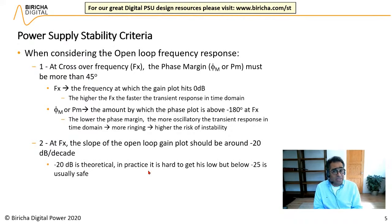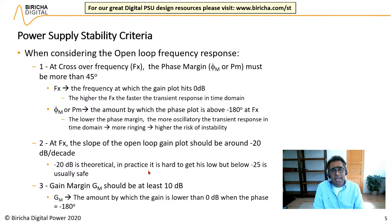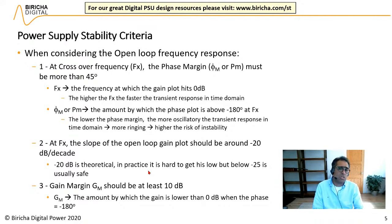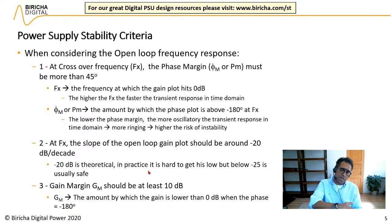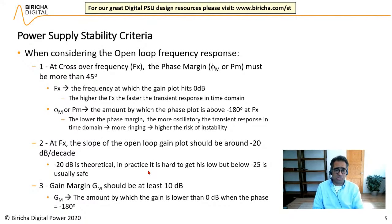Gain margin should be at least 10 dB. The gain margin is defined as how much the gain is below zero dB when the phase hits minus 180 degrees. The software will print the crossover frequency, phase margin, slope, and gain margin as numbers so you can quickly determine whether the power supply will be stable or not.